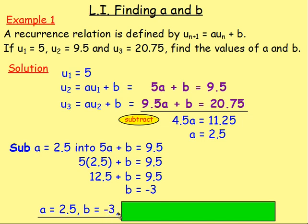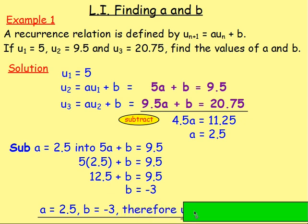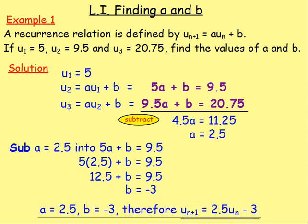A lot of the time you will also be asked what the recurrence relation is. So if you were asked for it, you would say: therefore the recurrence relation is U(n+1) equals 2.5·U(n) minus 3. That's just substituting in the values of A and B into your general form. As I said, this is mainly used in real life examples, so let's try one.